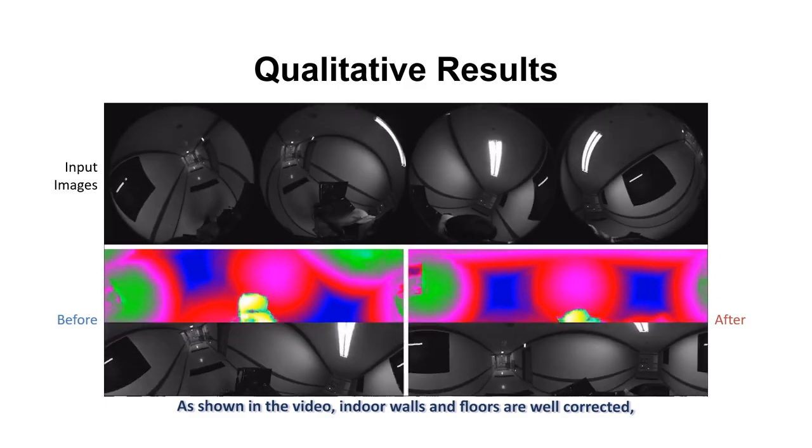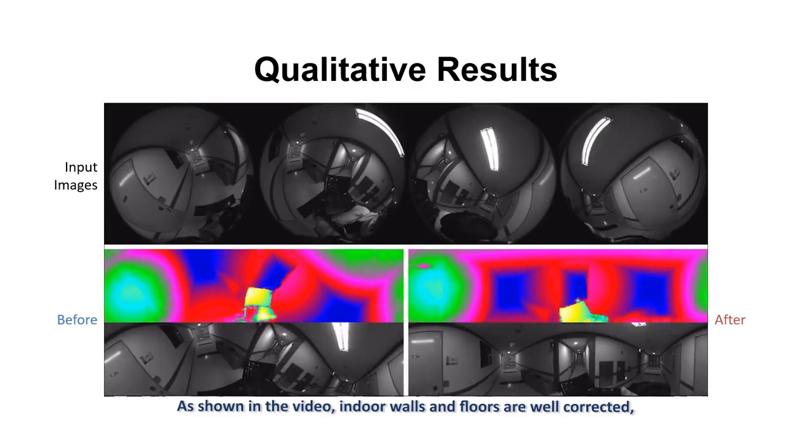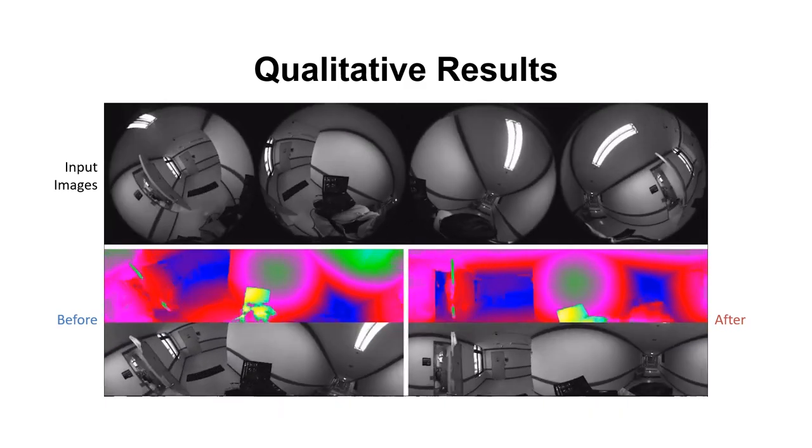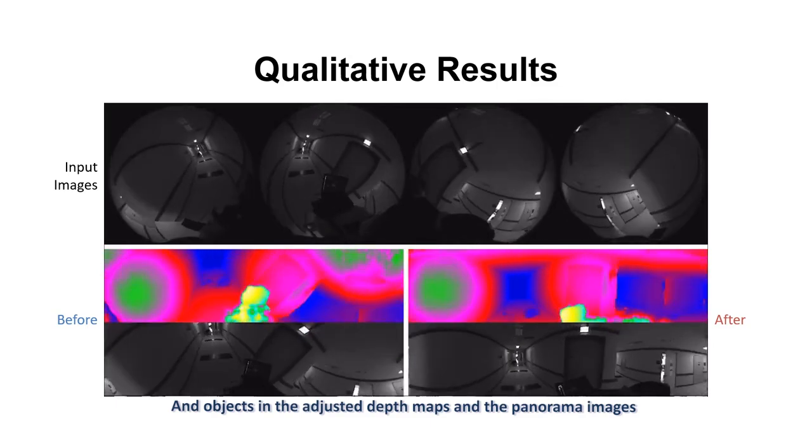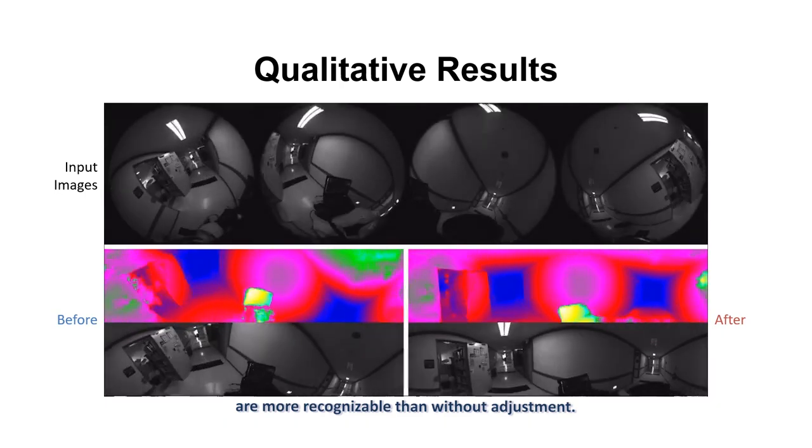As shown in the video, indoor walls and floors are well corrected. And objects in the adjusted depth maps and the panorama images are more recognizable, than without adjustment.